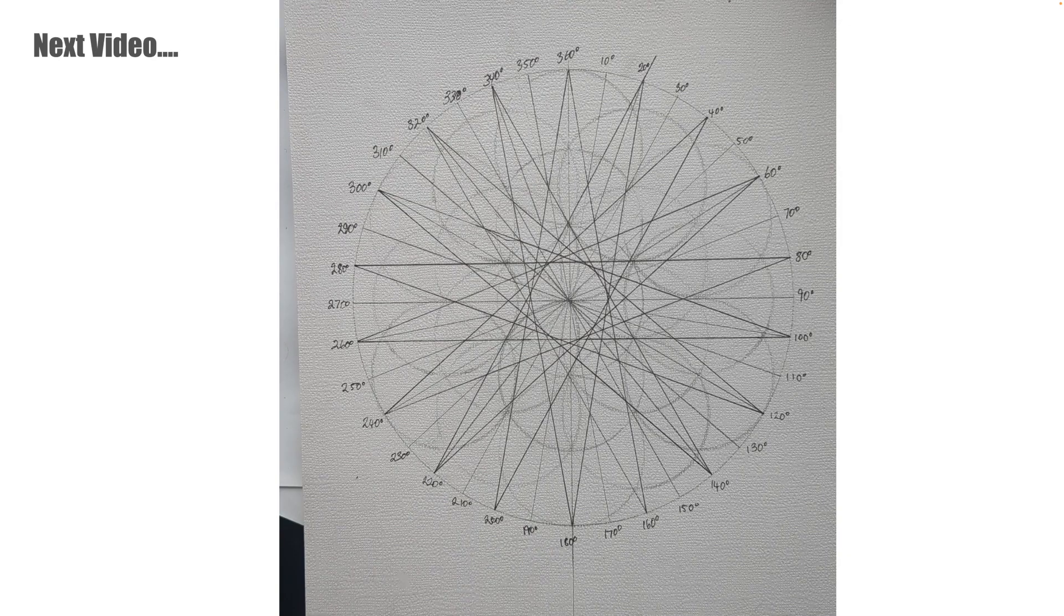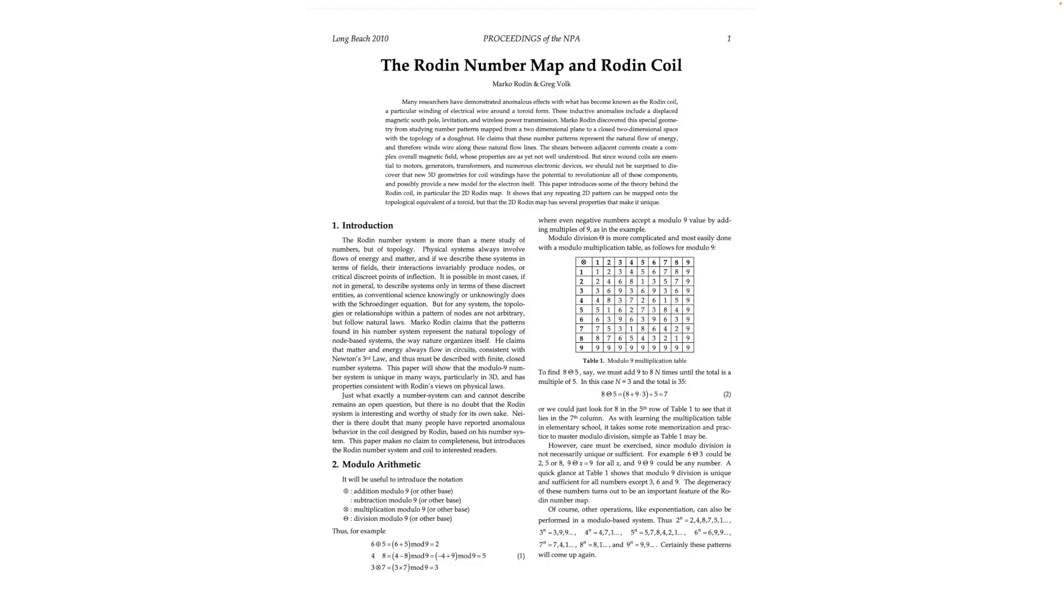In the next videos we learn how to draw the toroid using a compass and straight edge before we move on to how we can apply the number map to the toroid skin. The process I'm giving here is based on research into a paper, The Rodin Number Map and Rodin Coil, published by Marco Rodin and Greg Volk in 2010. I'll also reference the videos of Tom Barnett a little later on.